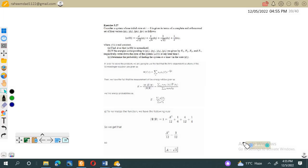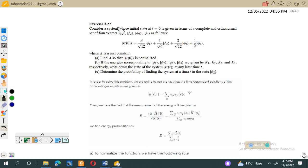Assalamualaikum, dear students, welcome to the lectures of quantum mechanics. Problem number 3.27: Consider a system whose initial state at t=0 is given in terms of a complete and orthonormal set of four vectors φ₁, φ₂, φ₃, and φ₄, with the state at t=0 having some unknown coefficient a and similar coefficients for the normalized states.